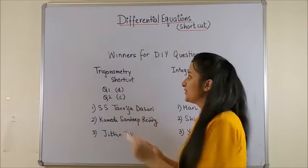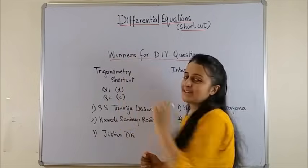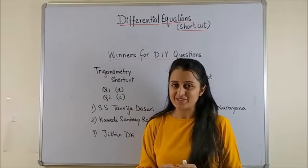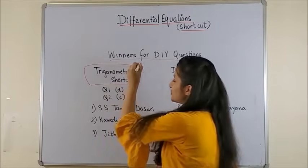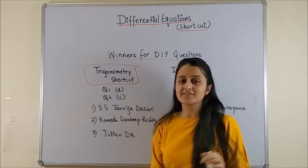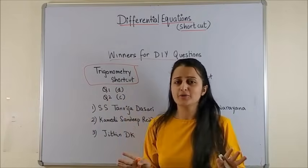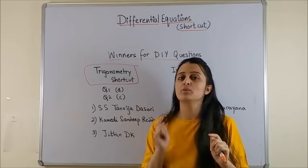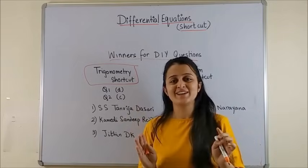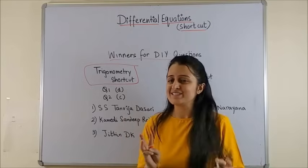It's time to acknowledge the winners for the previous two DIY questions. So, for trigonometry shortcut the correct answers were question 1 part B question 2 part C. I know I had said that I'll be taking only one name but then I couldn't stop myself from taking at least 3.